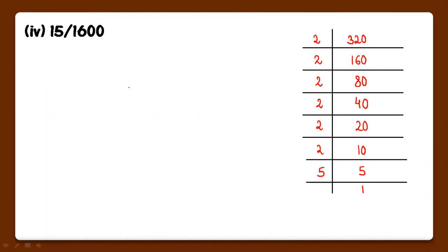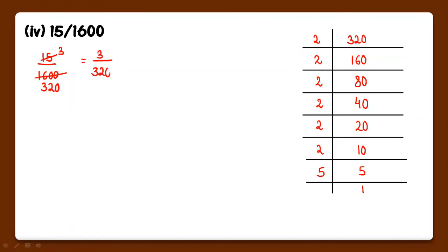Now next part: 15 upon 1600. Now these numbers are not co-prime numbers, kyunki ye 5 se cut ho jayenge. Dividing both by 5: 15 divided by 5 gives 3, and 1600 divided by 5 gives 320. So it is 3 upon 320. Now they are co-prime numbers.